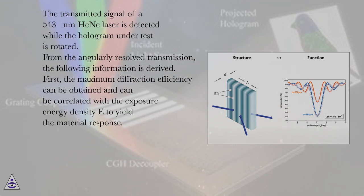The transmitted signal of a 543 nm HeNe laser is detected while the hologram under test is rotated. From the angularly resolved transmission, the following information is derived.